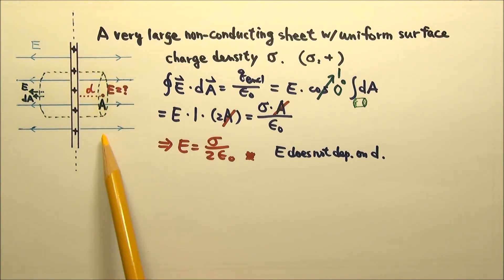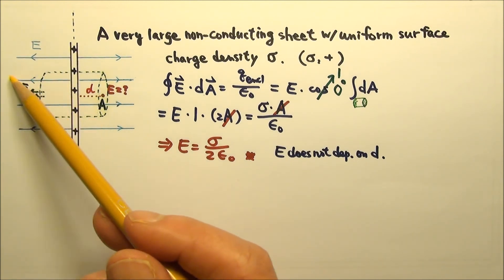So on this side of the sheet, the electric field has a constant magnitude and they all point to the right. So on this side, we have uniform electric field. On that side, we also have uniform electric field, just the electric field is in a different direction.